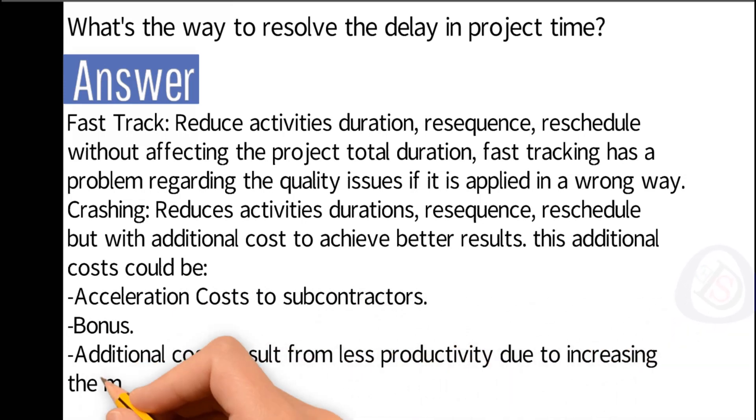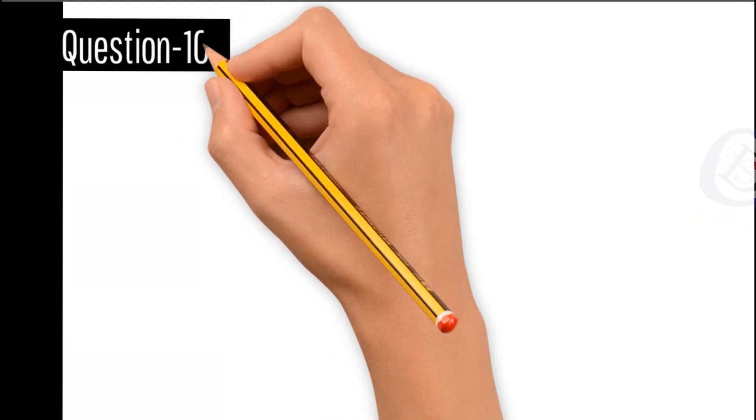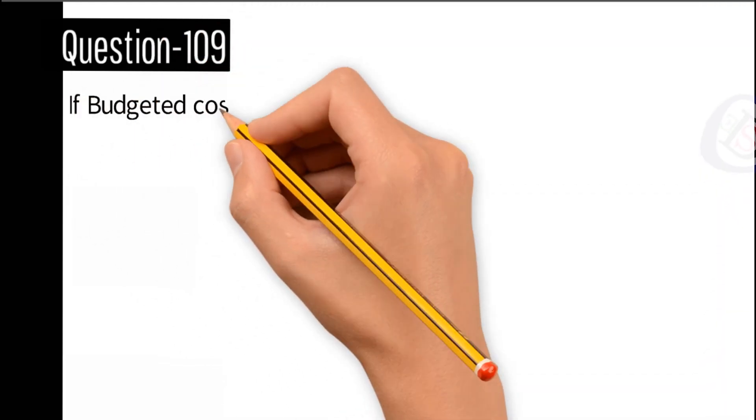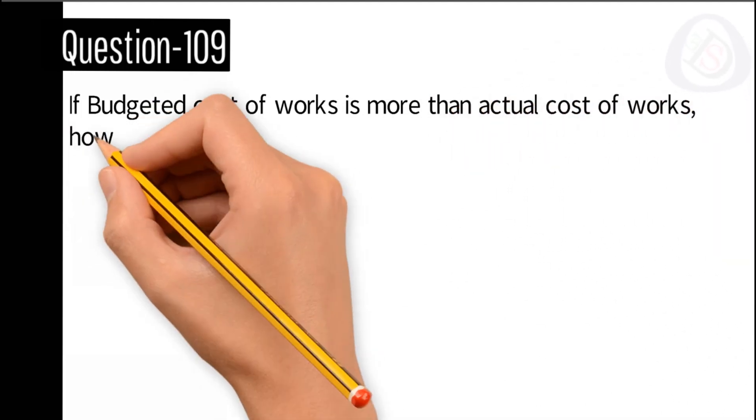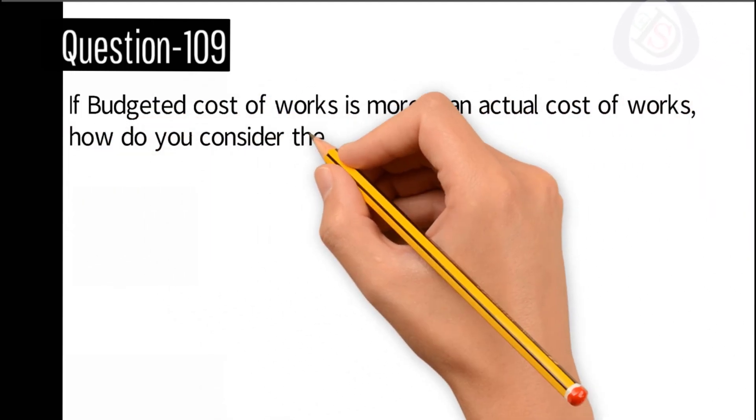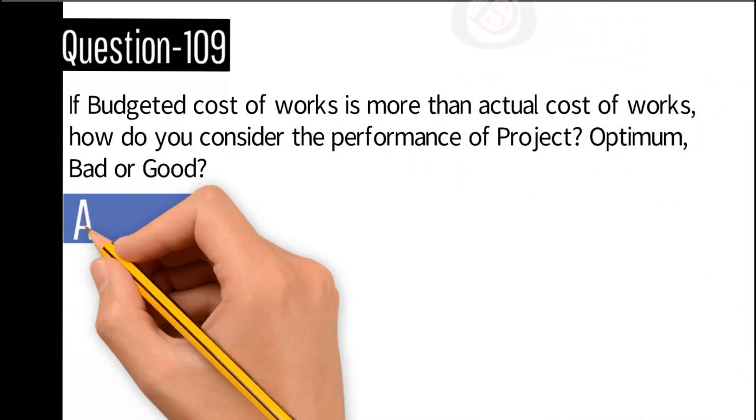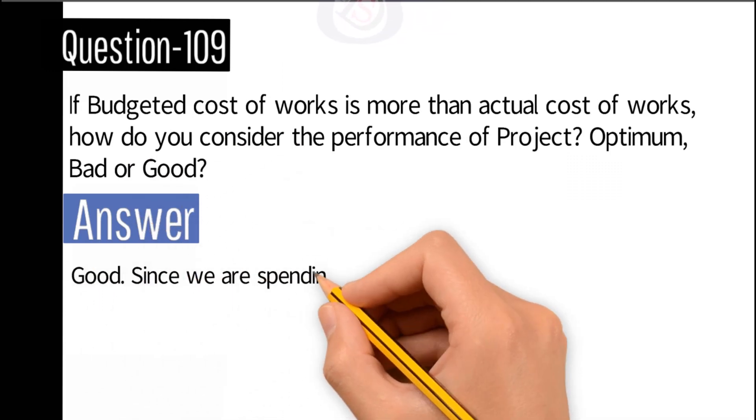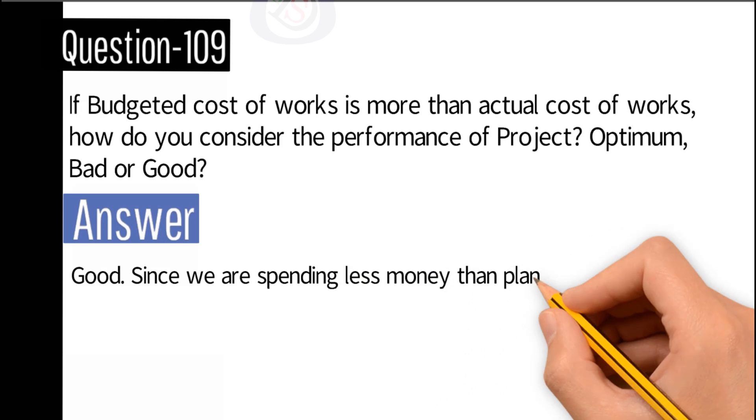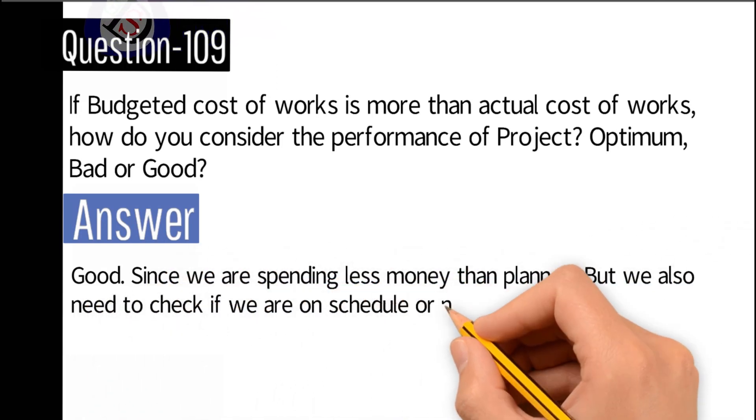Question number 109: If budgeted cost of works is more than actual cost of works, how do you consider the performance of the project? Optimum, bad, or good? Answer: Good, since we are spending less money than planned, but we also need to check if we are on schedule or not.